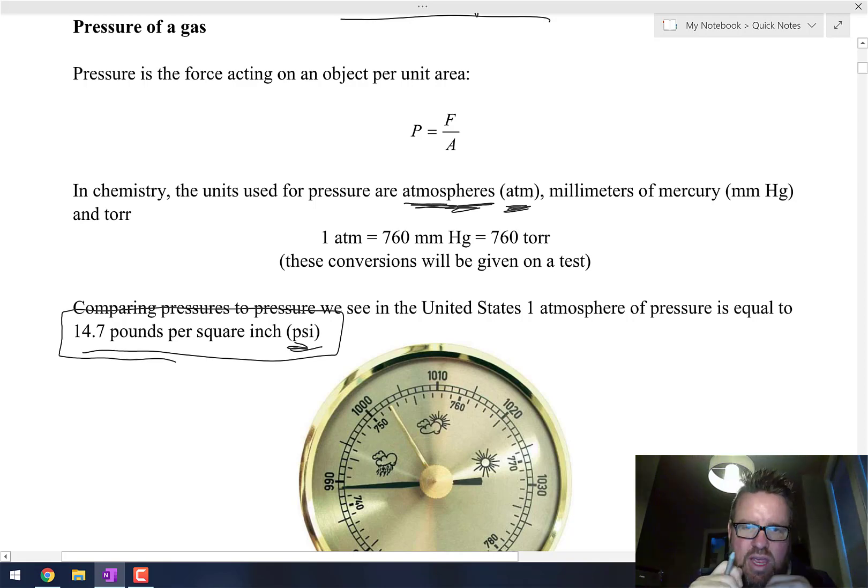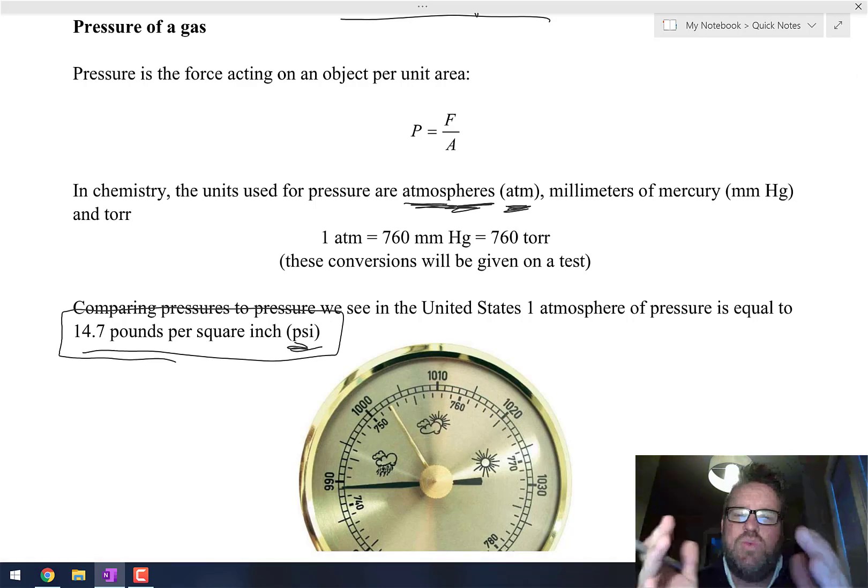When you go to, for example, Switzerland and you buy a watch, in America it'll say it'll be good up to 30 feet deep. In Switzerland it's going to say this watch will be able to withstand up to six atmospheres of pressure. That is the unit, like Celsius, that most of the world uses for pressure.